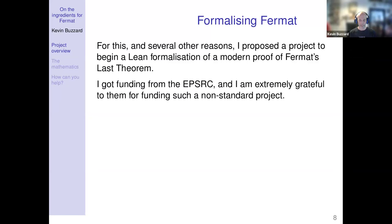To get the Galois representation we need a huge amount of machinery: all of local and global class field theory, moduli spaces of abelian varieties, Shimura varieties, canonical models of Shimura varieties, and étale cohomology — possibly surfaces if things aren't ramified everywhere. We'll need to explain the étale cohomology of a Shimura variety in terms of automorphic representations. That's an absolutely vast amount of mathematics, and it was all known in the 1980s, so let's skip it for now. All very well skipping Mazur's theorem, but I've just skipped global class field theory — a 300-page textbook — and lots of deep theorems of Deligne and others.